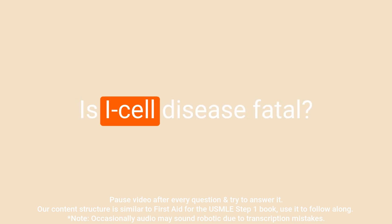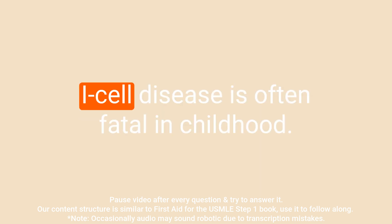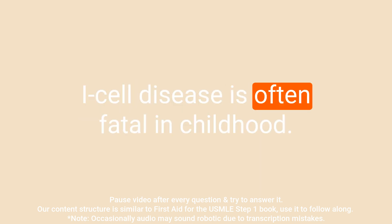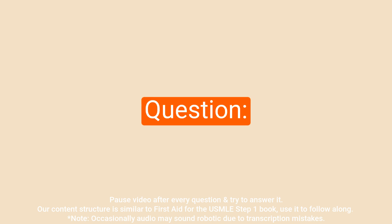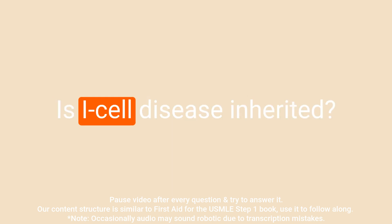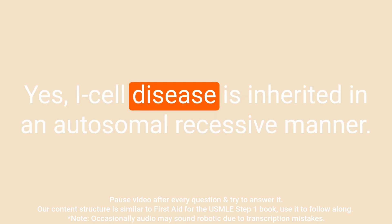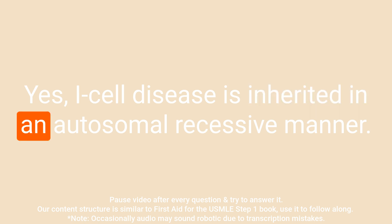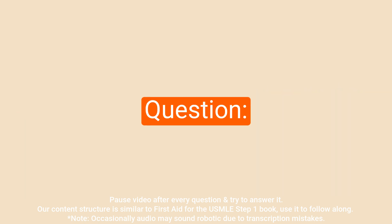Question: Is I cell disease fatal? Answer: I cell disease is often fatal in childhood. Question: Is I cell disease inherited? Answer: Yes, I cell disease is inherited in an autosomal recessive manner.